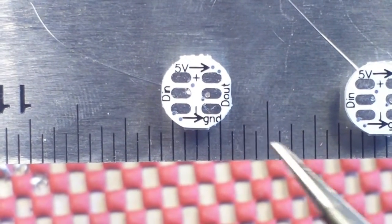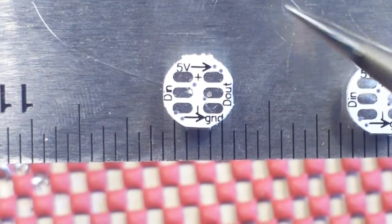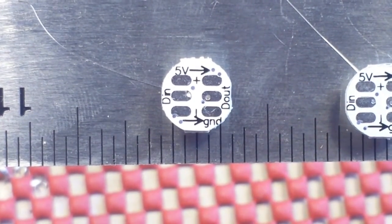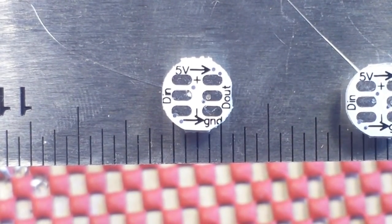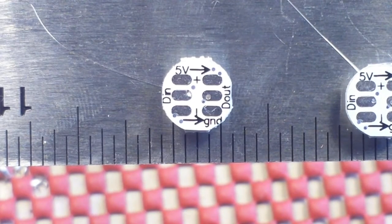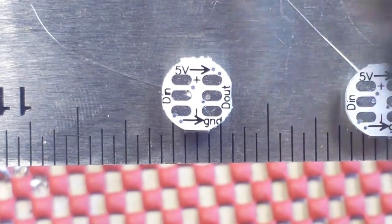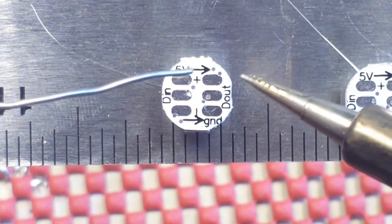Alright, I'm going to start by tinning these pads. And yes, I am using the Zenni 937D. Cheapest Chinese soldering station I could find. And I'll tell you, I like it.